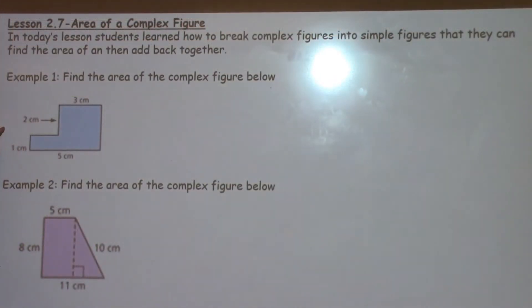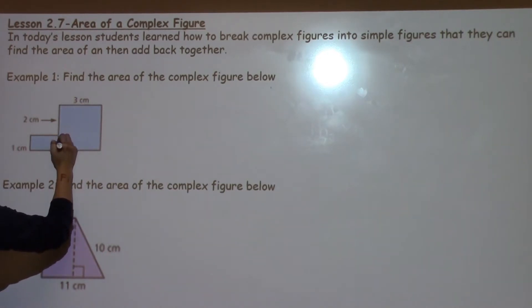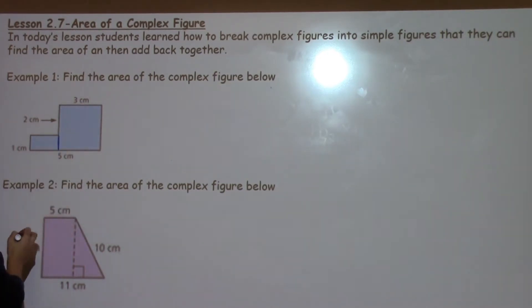Example 1 says to find the area of the complex figure below. So I look at the complex figure here and I don't really know how I could find the area of the shape how it is. So I need to think about how can I break it into simple shapes that I do know how to find the area of. I can see that if I chop it right here I could make a big square and a small rectangle.